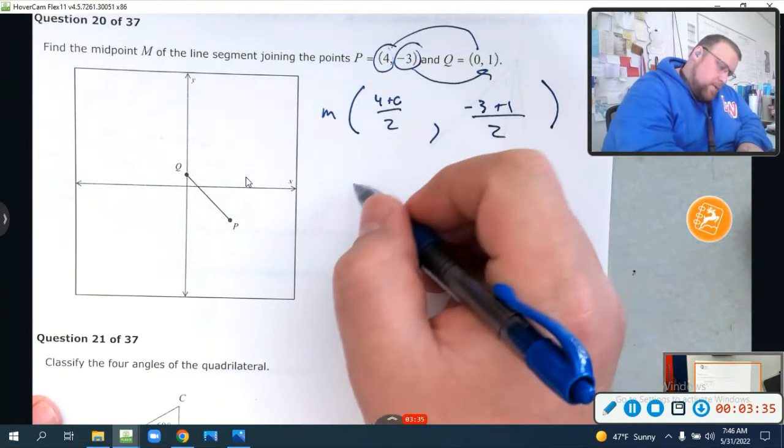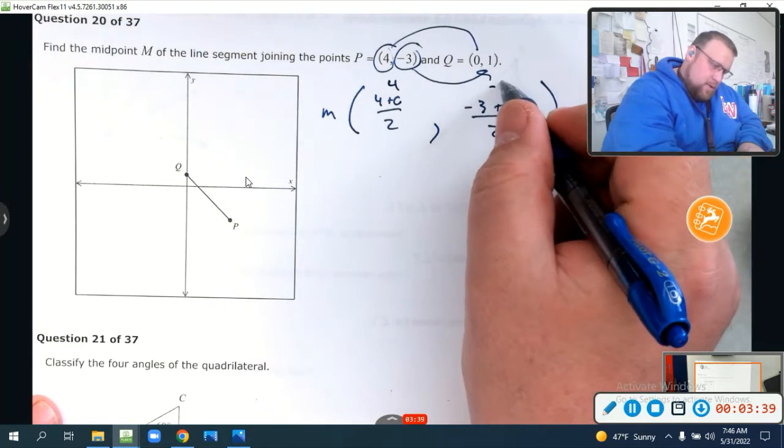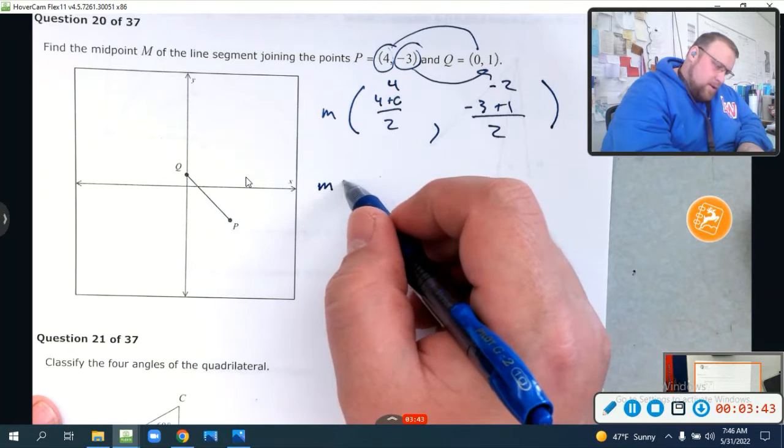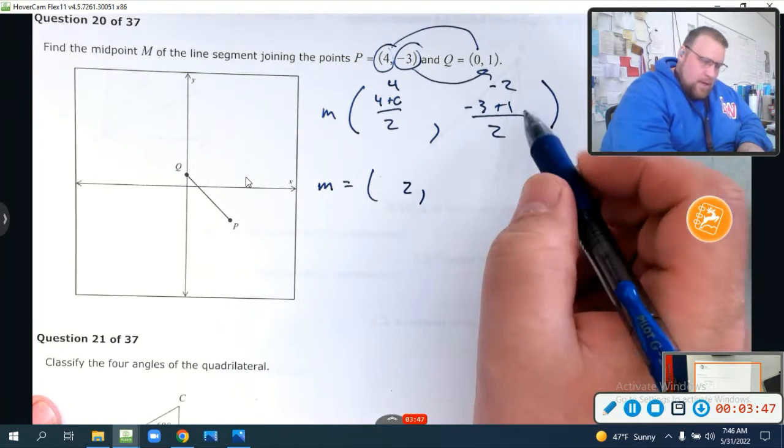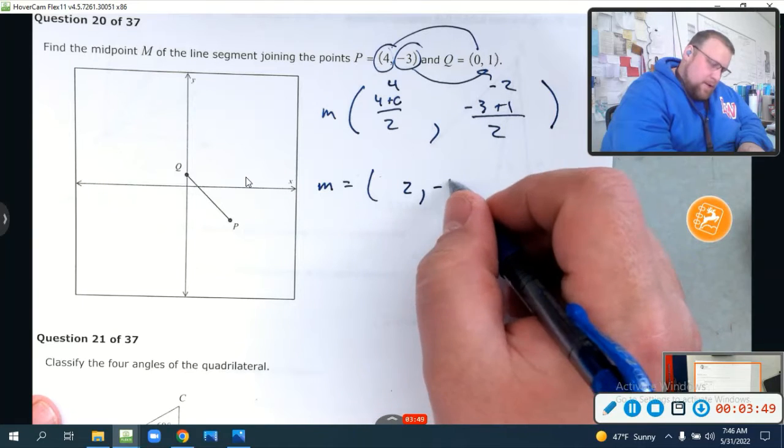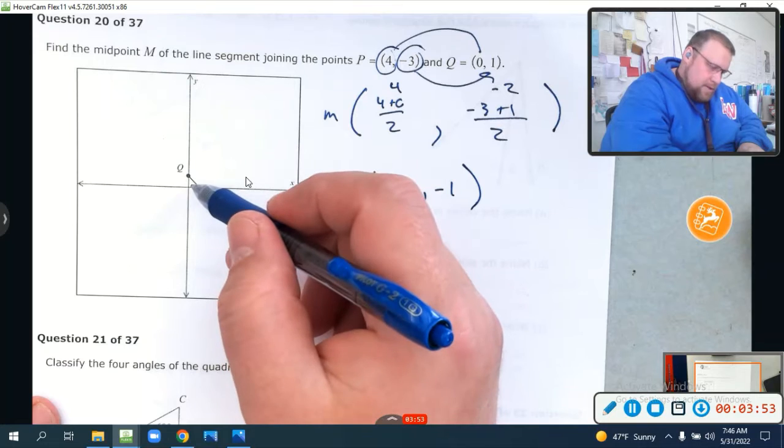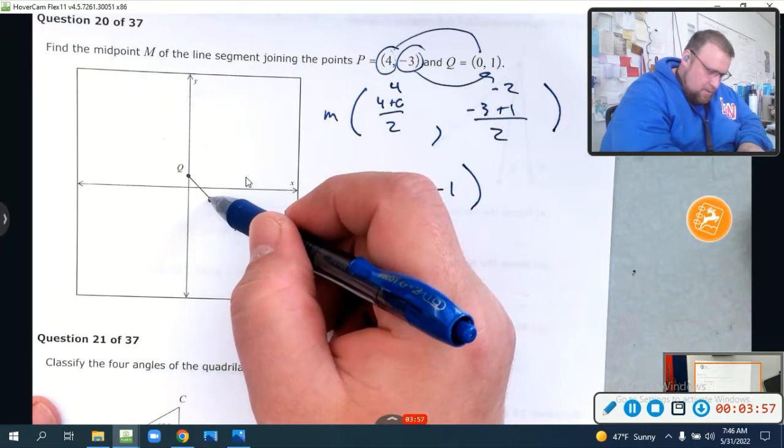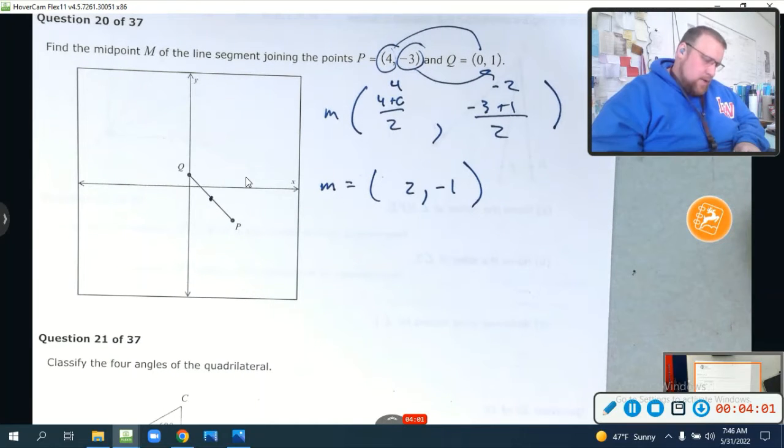Which is going to be what? This is 4. This is ultimately negative 2. So, the midpoint is the point 4 over 2 is 2, and negative 2 divided by 2 is negative 1. There we go. Makes sense. If we look at that, it would be kind of like 2, negative 1, right there. That makes sense.